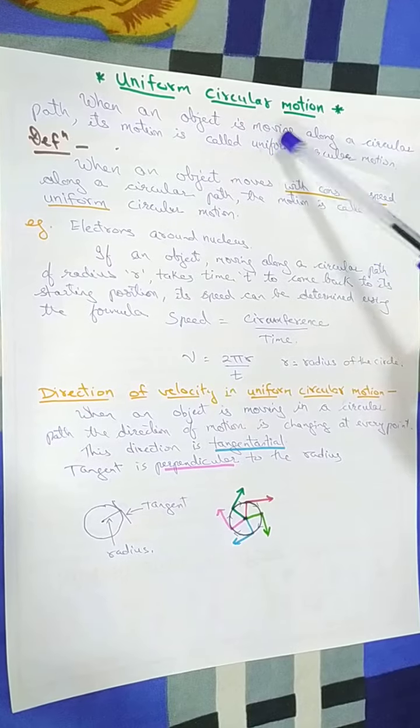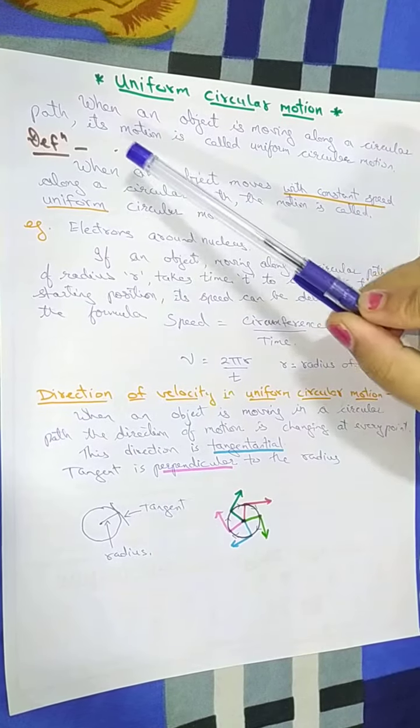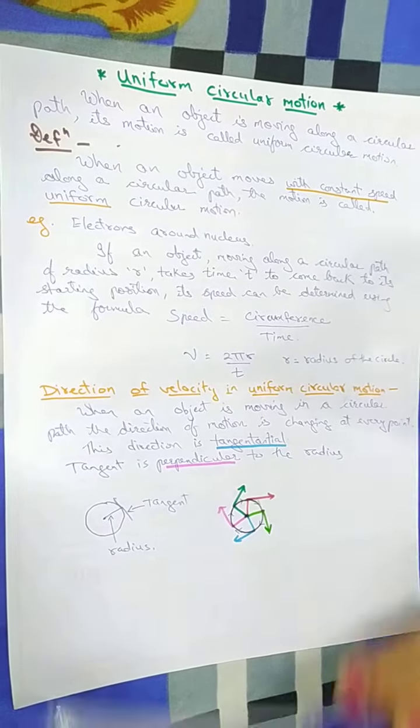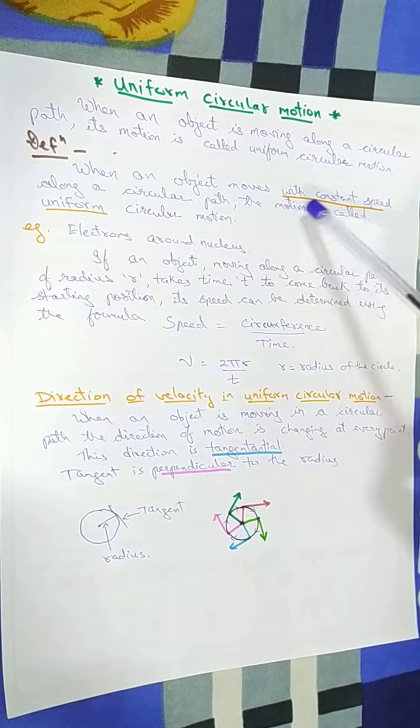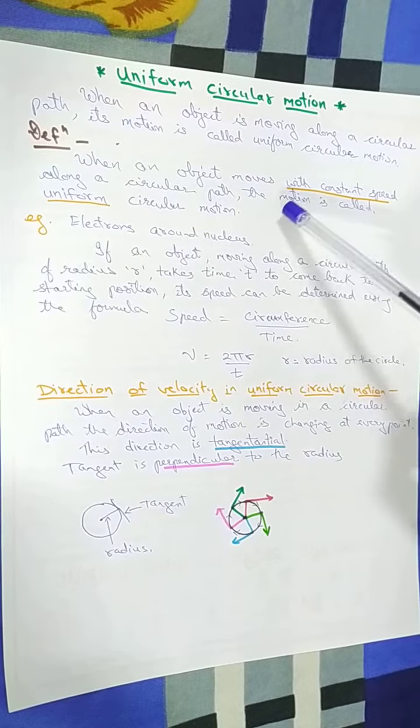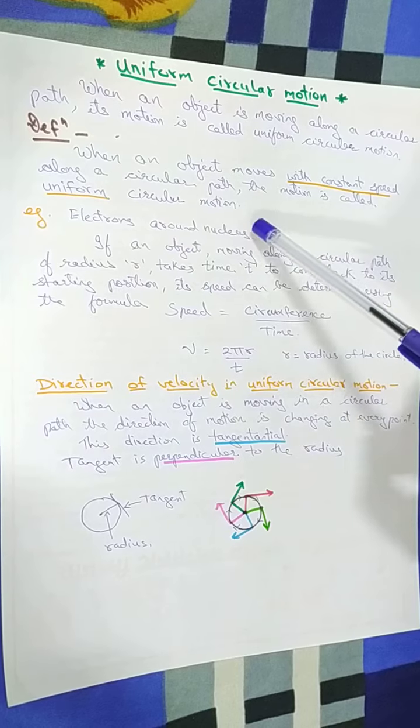So when an object is moving along a circular path, its motion is called uniform circular motion. Let us define: when an object moves with constant speed along a circular path, the motion is called uniform circular motion.